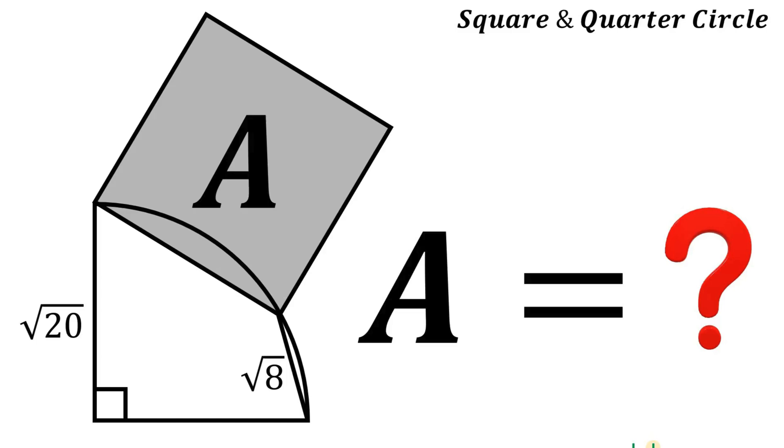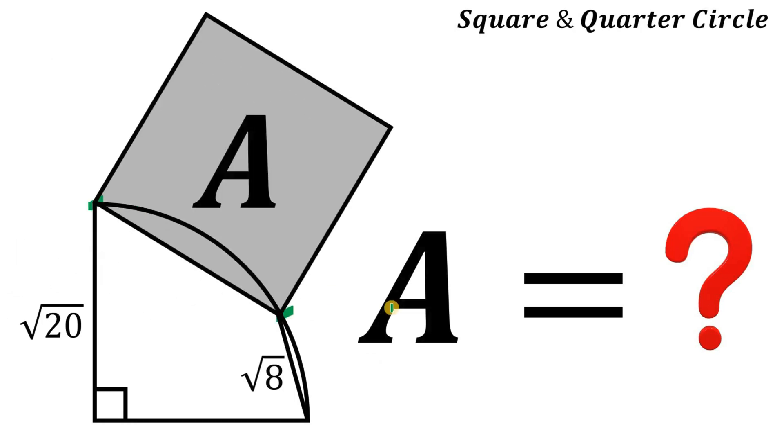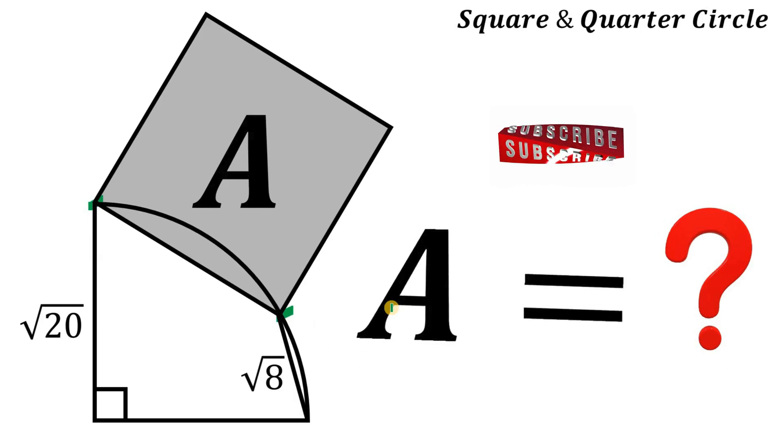Today we will answer a geometry challenge. Here's the question: given this quarter circle with a radius of square root of 20 units, let's draw a chord that measures square root of 8 units. From here, using these two points, let's create a square like this. The question is: what is the area of this square?